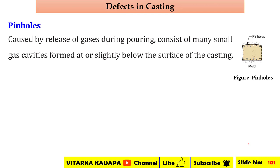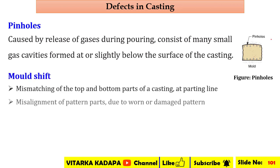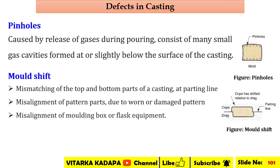The next defect is pinhole formation. Pinholes are formed due to gases during pouring and consist of many small gas cavities slightly formed below the surface of the casting. This pinhole formation takes place during the solidification process. Next is mold shift — in the mold-making process, the cope box and drag box must align exactly.